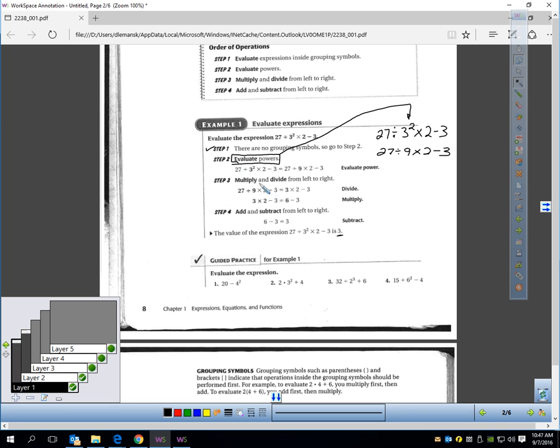So you go to step two, which is powers. Are there any exponents in the problem? And you're probably looking and saying, yes, there is. Aha, right here. So you notice I put a little arrow to it. I've got to do that first. Three squared is nine. So the problem turns into 27 divided by 9 times 2 minus 3. I took care of my powers. I'll put a little check mark next to that. What's next?